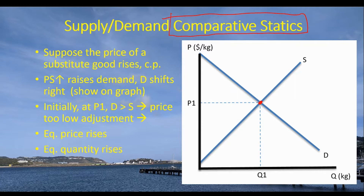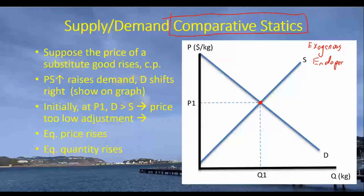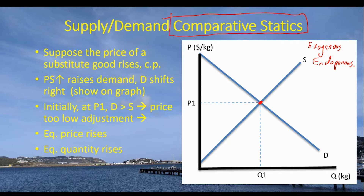I want to talk about the distinction between exogenous and endogenous variables. An exogenous variable — like the price of a substitute good — is one whose value is determined outside of this particular market. Participants observe that price and it affects their decisions here, but they don't have any influence over it. Its value has to be given to the participants in order for them to make their appropriate decisions.